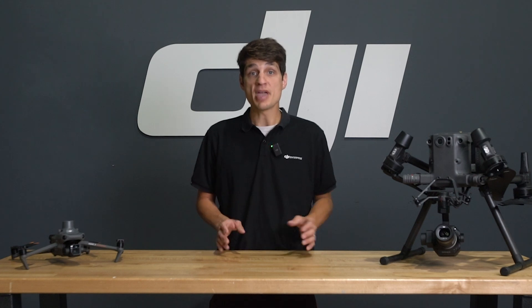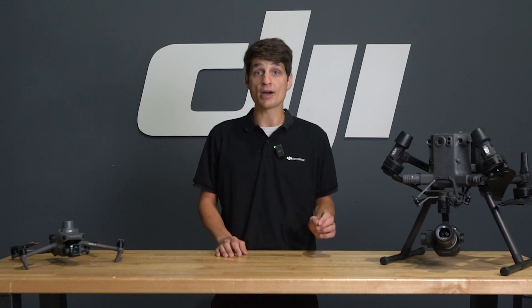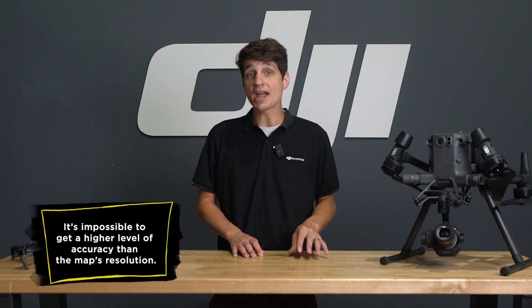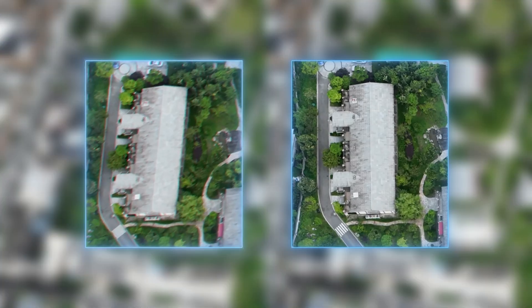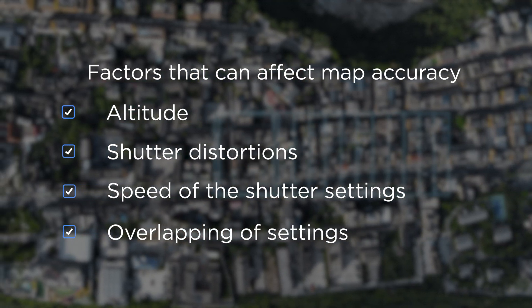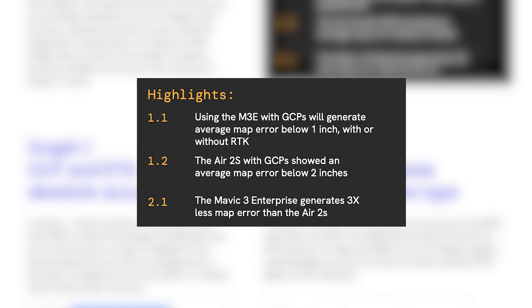When planning a mapping mission, many characteristics come into play for accuracy. The mission's altitude will help determine the ground sample distance, or resolution, of the map. It is impossible to get a higher level of accuracy than the overall map's resolution. Other factors that can hurt mapping accuracy include rolling shutter distortions from the sensor, too slow of shutter speed or mapping too quickly, and insufficient overlap settings. A recent study conducted by DroneDeploy found that the Mavic 3 Enterprise with RTK was capable of inch-accurate survey grade aerial mapping, while a consumer drone lacking RTK and a mechanical shutter was not.